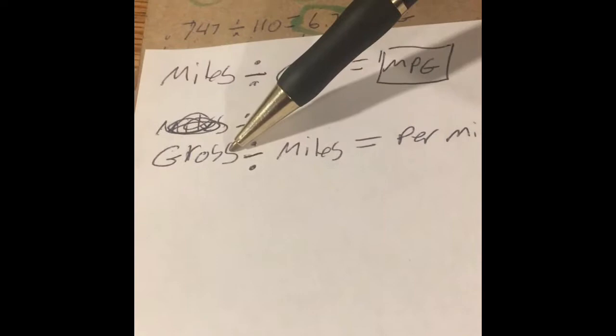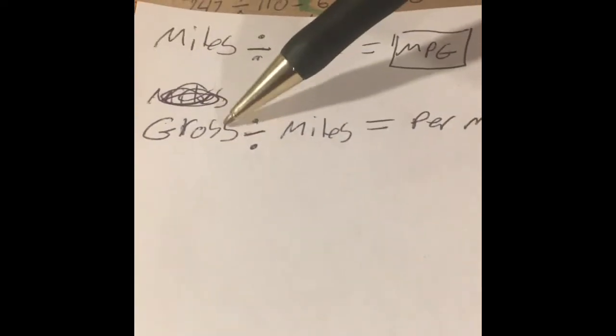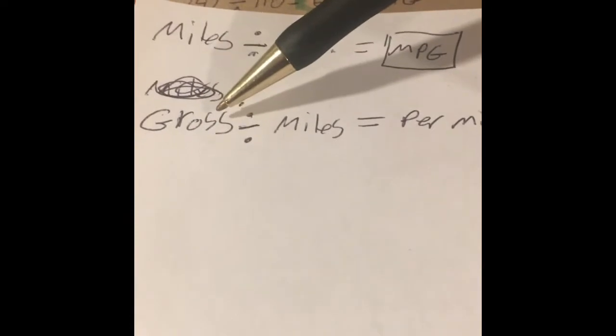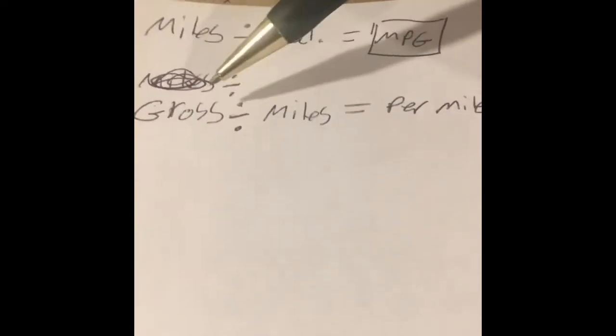And then gross revenue, I say gross is what I actually see so that I have to take everything out of it except for my brokerage fee. So gross divided by miles equals your per mile.